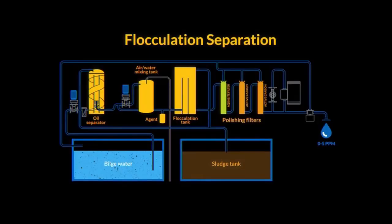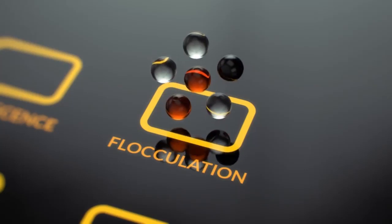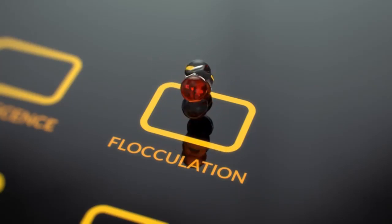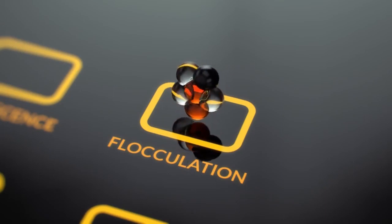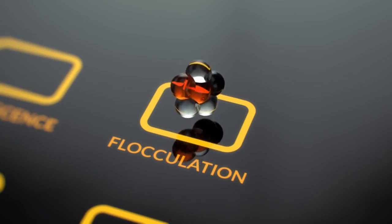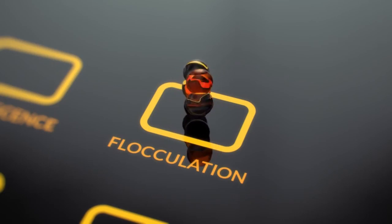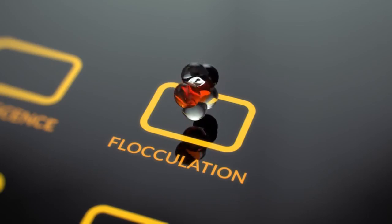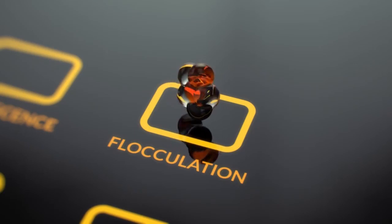As we have said, flocculation is a process in which two or more particles aggregate, stick together. In the well-known Marin Flock AB system, we help the flocculation process along by adding a flocculating agent, such as polyaluminium chloride, to the bilge water. Particles are then bound together through chemical action.